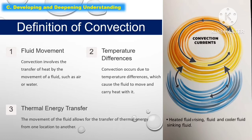Convection involves the transfer of heat by the movement of a fluid, such as air or water. The second definition is temperature differences — convection occurs due to temperature differences, which causes the fluid to move and carry heat with it. The third is thermal energy transfer: the movement of the fluid allows for the transfer of thermal energy from one location to another.